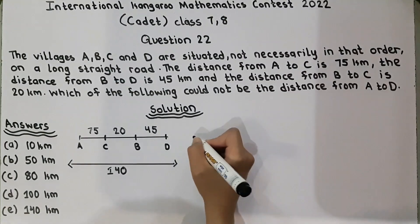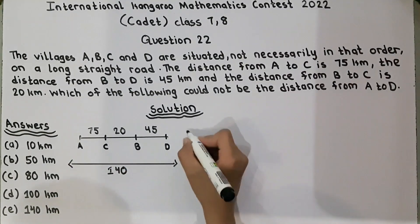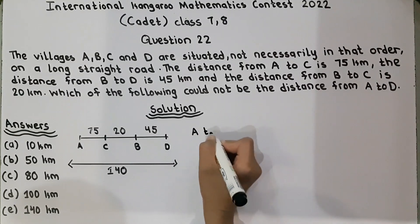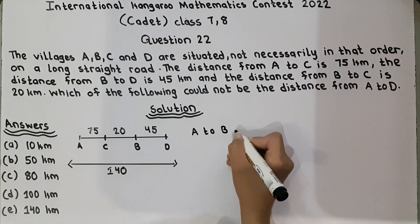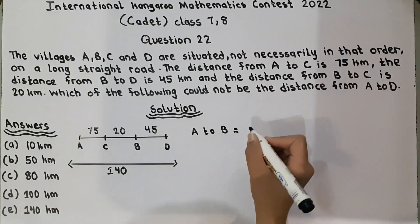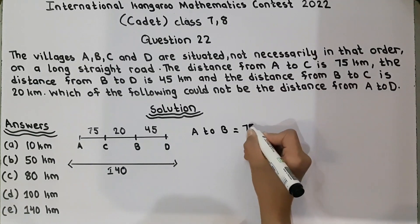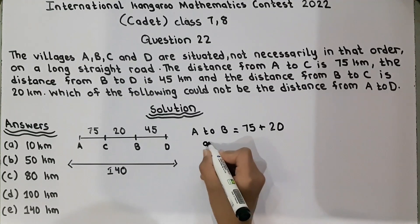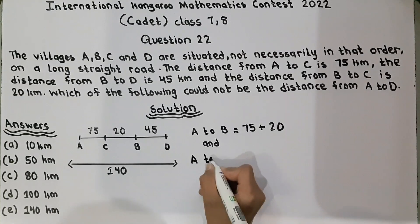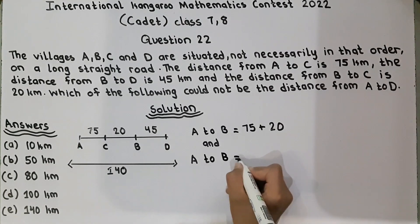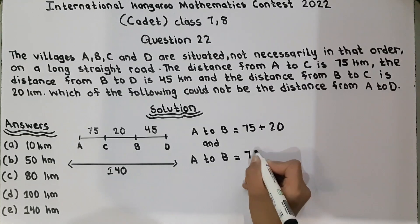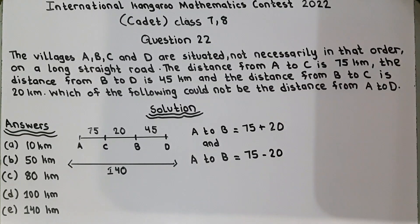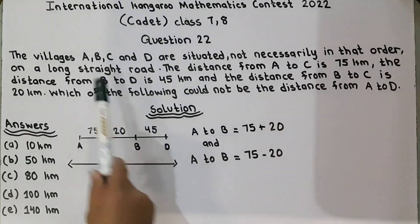So, to find this, we will find the distance from A to B. A to B is equal to 75 plus 20 and A to B is equal to 75 minus 20. We put it minus here.